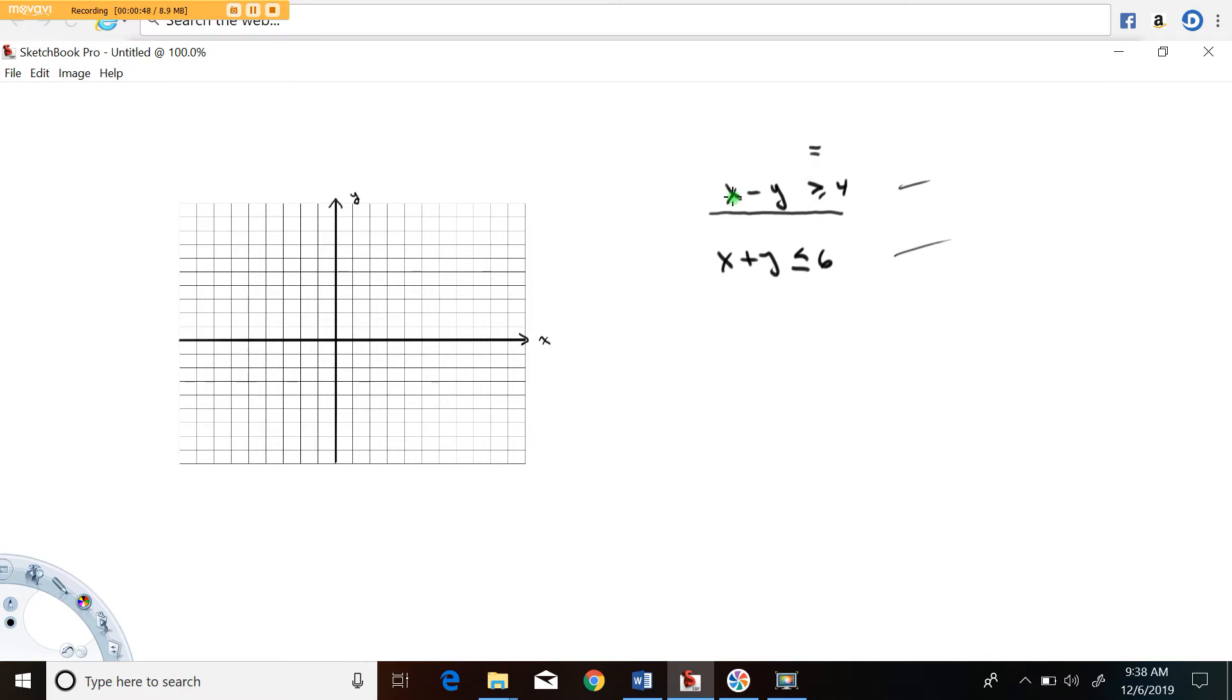If you put 0 in for x and solve for y it's going to read negative y equals 4 and you solve that for y you get y equals negative 4. So 0, 1, 2, 3, 4, there's the intercept for this equation.